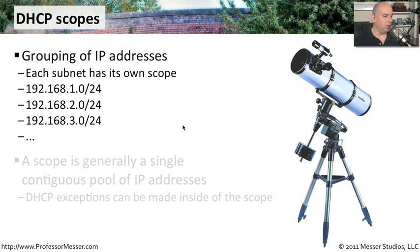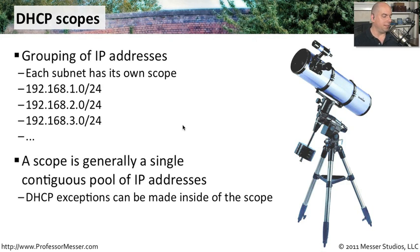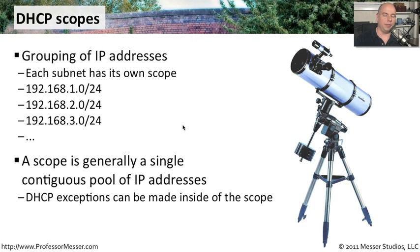A scope can also be a contiguous pool. Generally, it's required to make it a contiguous pool of addresses, and then you would create exceptions inside of that if you wanted to statically assign an IP address, for example.